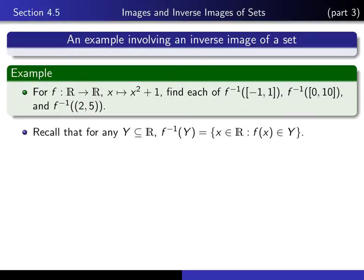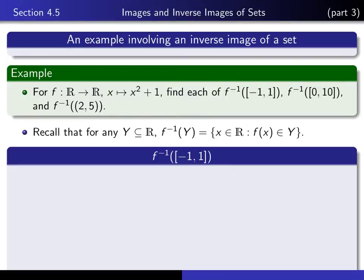Recall first of all the working definition: if you give yourself a subset of the codomain, then the inverse image of that subset is equal to the set of x in the domain such that f of x is an element of that subset y. With that definition, see if you can calculate f inverse of the closed interval from minus 1 to 1.